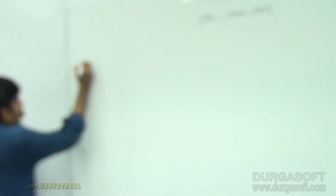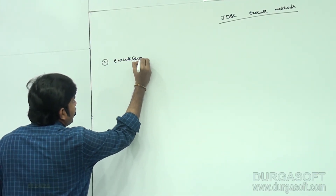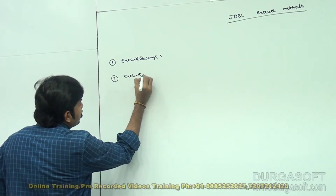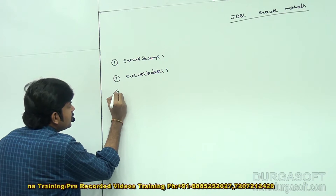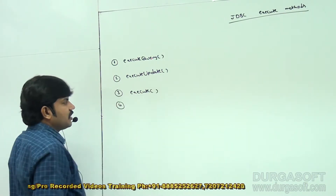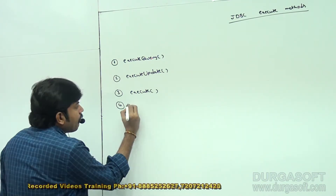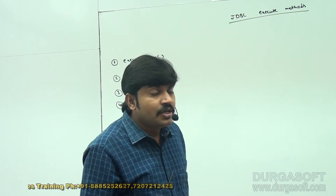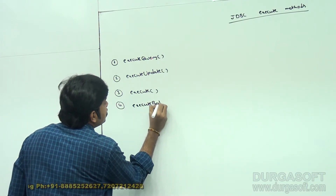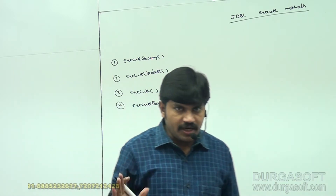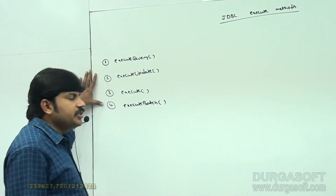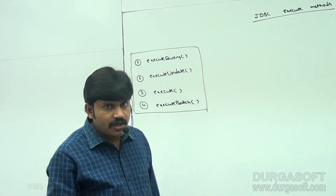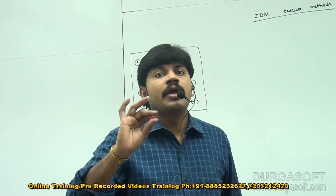The first one is executeQuery method. The second one is executeUpdate method. The third one is execute method. The fourth one is executeBatch. These are the four execute methods available in JDBC. So: executeQuery, executeUpdate, execute, and executeBatch.